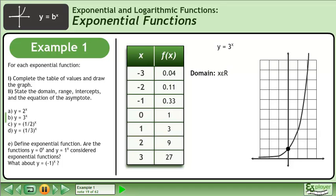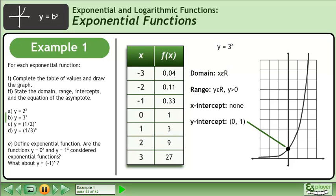The domain is x belongs to the set of real numbers. The range is y belongs to the set of real numbers, with the restriction that y is greater than 0. There is no x-intercept. The y-intercept is (0, 1). The equation of the asymptote is y equals 0.